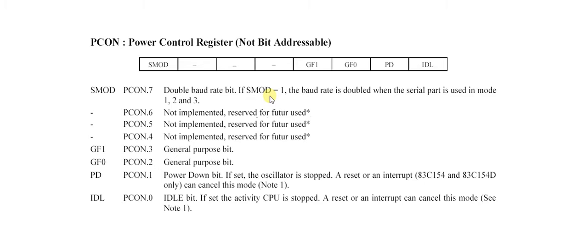Mode 1, 2, and 3 means 8-bit UART. Bits 6, 5, and 4 are reserved bits. Bit 3 and bit 2 are general purpose bits, so these are used for any general work.